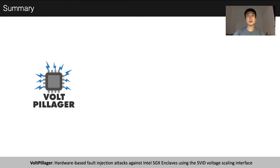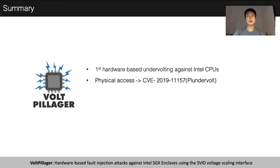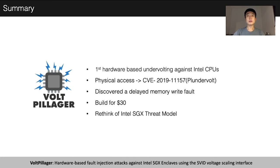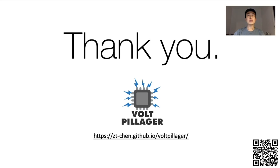In summary, our work — PLATYPUS — is a hardware-based undervolting attack against Intel CPUs that can bypass mitigations implemented for PlantVolt. We discovered a new type of fault called the delayed-write fault, and our tool can be built for only $30. With these findings, we should rethink the Intel SGX threat model: can SGX still protect against attackers who have control of the hardware? That's all for our presentation. Thank you for listening. You can find more information on our website.